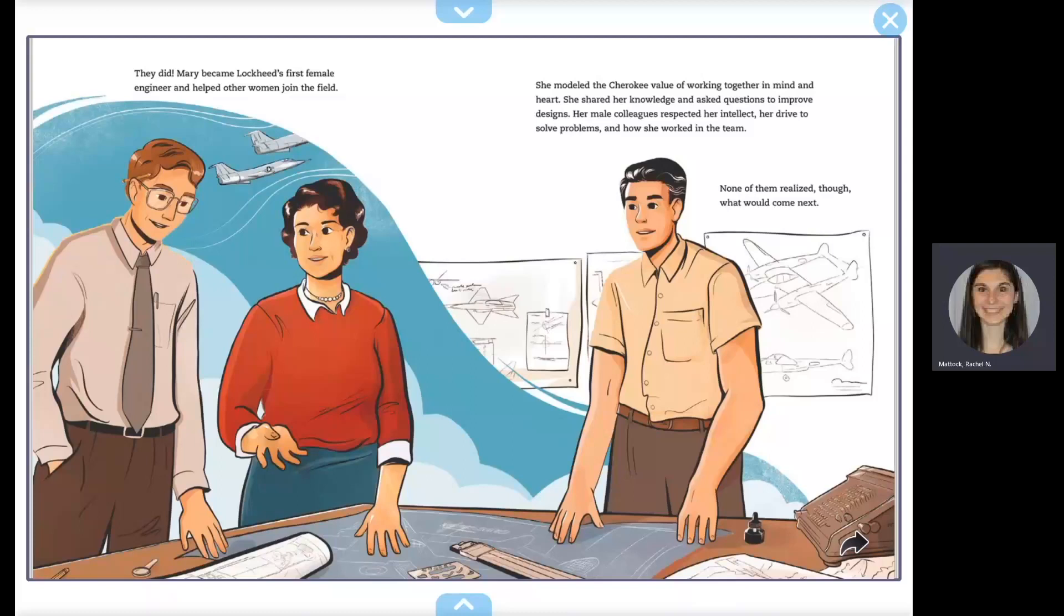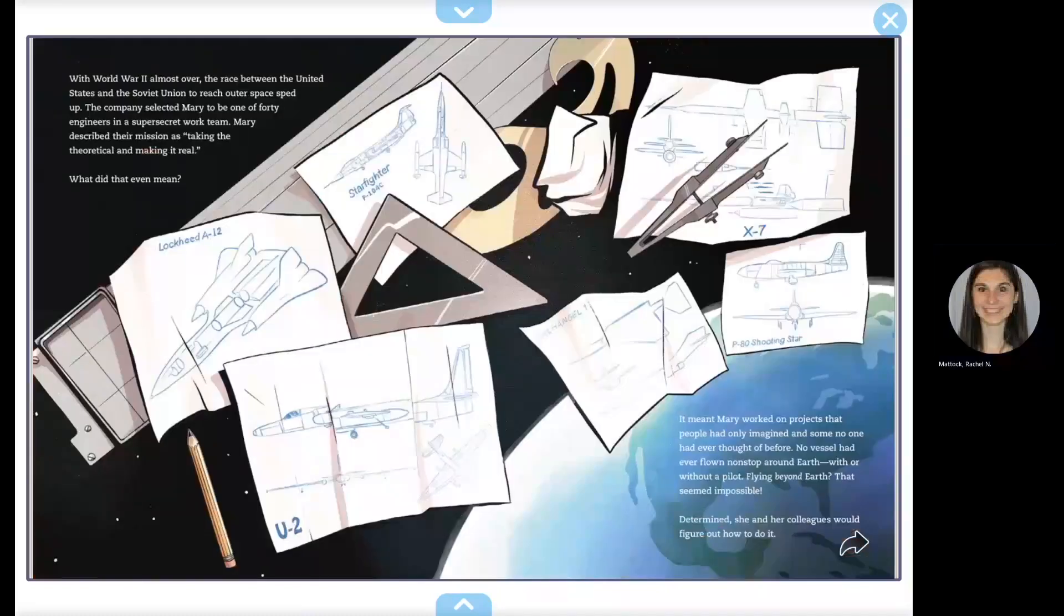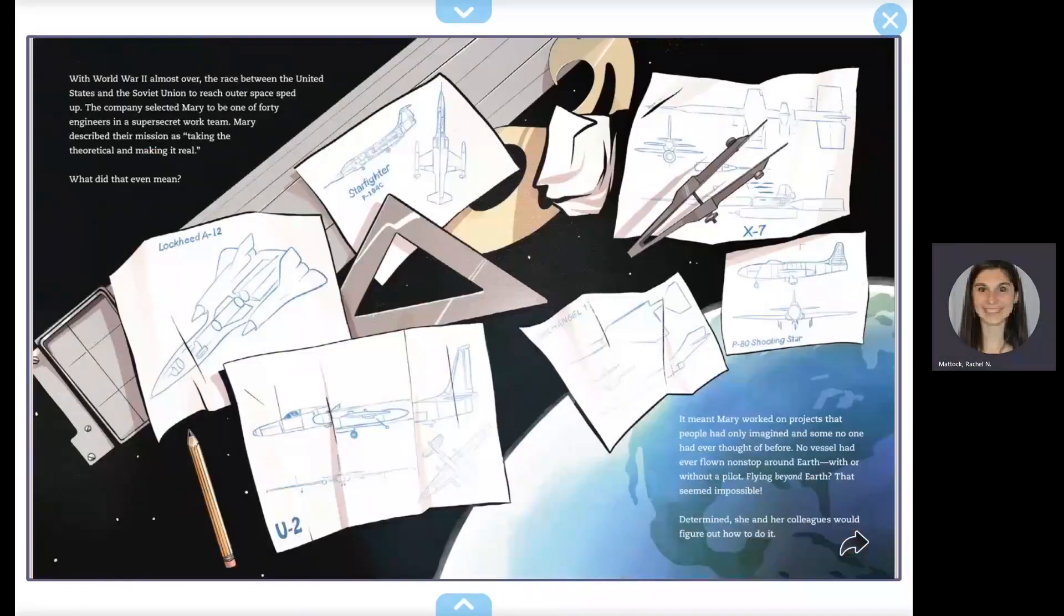Mary became Lockheed's first female engineer and helped other women join the field. She modeled the Cherokee value of working together in mind and heart. She shared her knowledge and asked questions to improve design. Her male colleagues respected her intellect, her drive to solve problems, and how she worked as part of the team. None of them realized, though, what would come next.